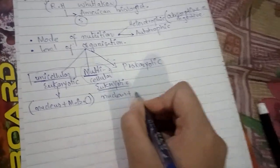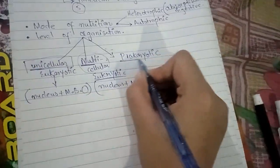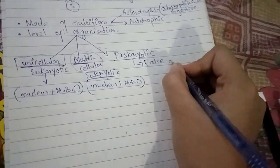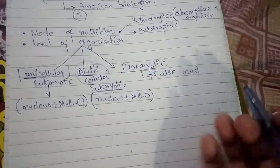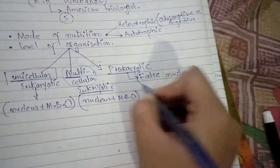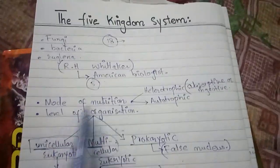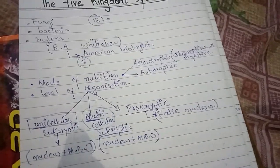The third level is prokaryotic, which means a false nucleus. These two categories — mode of nutrition and level of organization — are the basis on which the Five Kingdom System was classified.